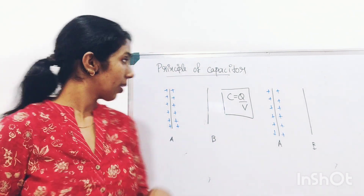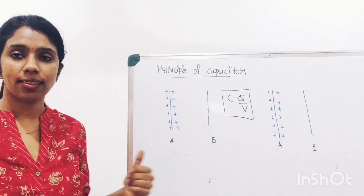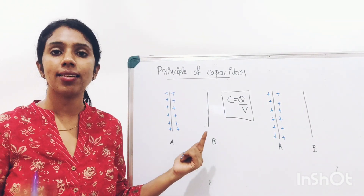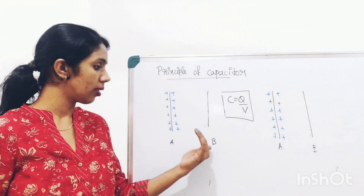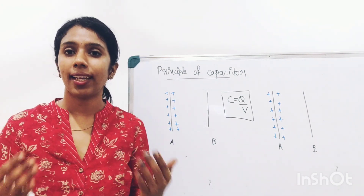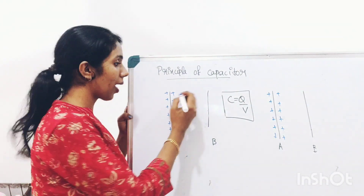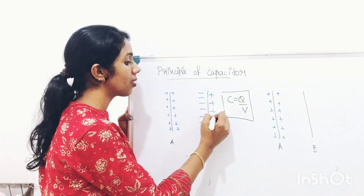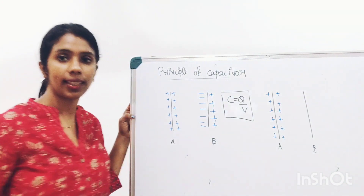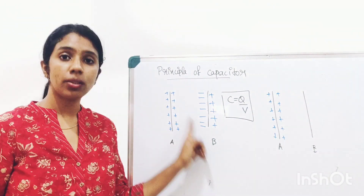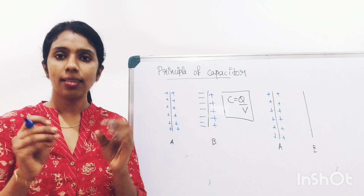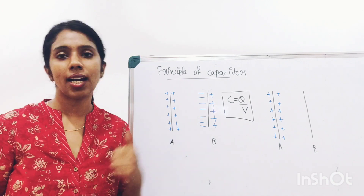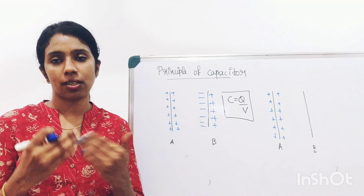Principle of capacitor. To explain the principle, consider two plates A and B, where A is a positively charged plate and B is an uncharged plate kept closer to A. Due to electrostatic induction, the face of B near to A acquires negative charge and the face further from A acquires positive charge. The negative charge tends to decrease the potential of plate A, while the positive charge tends to increase it.